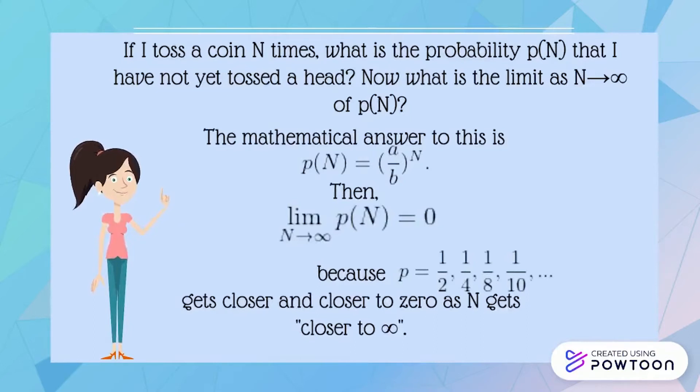If I toss a coin N times, what is the probability p(N) that I have not yet tossed a head? Now what is the limit as N approaches infinity of p(N)?